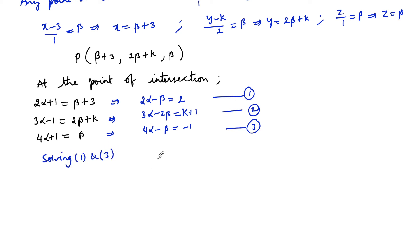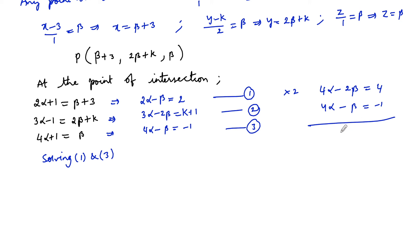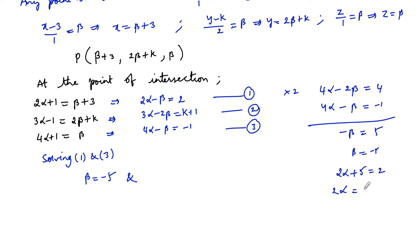Solving equations 1 and 3: multiply equation 1 by 2 to get 4α−2β = 4. Subtracting from equation 3 gives β = −5. Substituting β = −5 back into equation 1: 2α+5 = 2, so 2α = −3, giving α = −3/2.